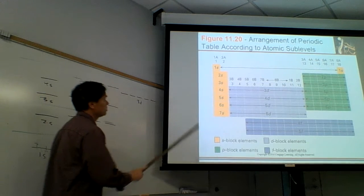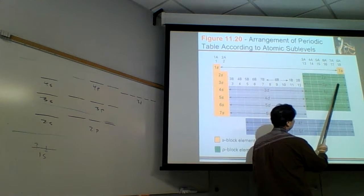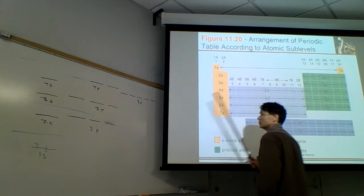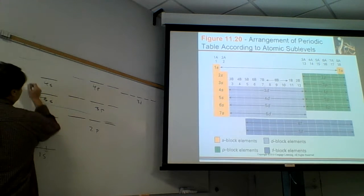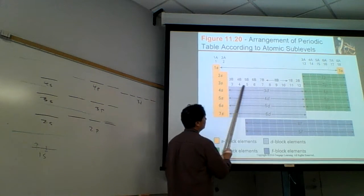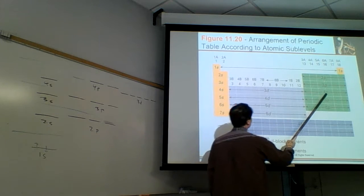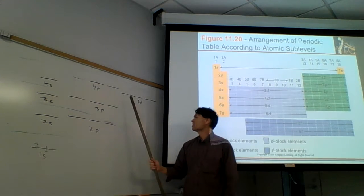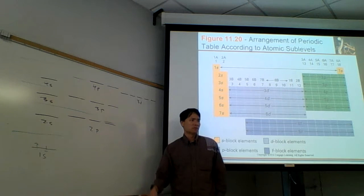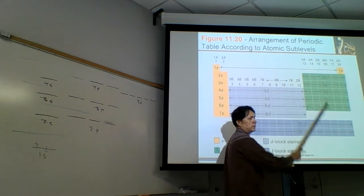The third shell consists of a 3s, starting at sodium. To fill the 3p orbitals we need 6 electrons, ending with argon. So we fill up the third shell with argon. The fourth shell starts with 4s but it's different — it goes 4s, then 3d, then 4p. The 4s takes 2 electrons, the 3d takes 10 electrons for 5 orbitals, and then 4p takes 6 electrons. We fill them in that order.